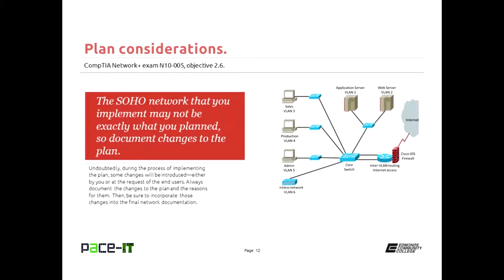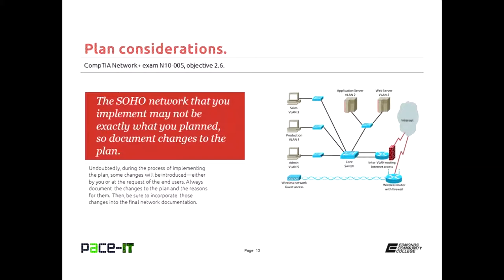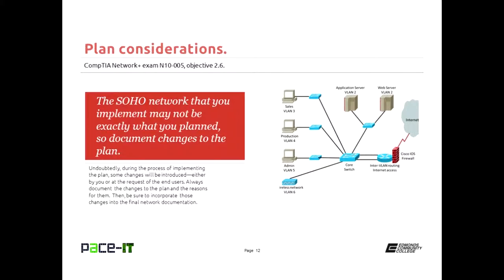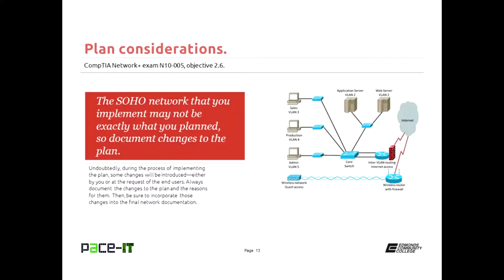So the network that you design and that you implement may not be exactly what you planned. So you need to document your changes. Why is that? Because even small changes can have a major impact on troubleshooting the network. There's not a whole lot of difference between the network that I'm showing right here and the one that was planned except for the addition of a wireless router that is connected straight to the Internet and that's your guest wireless network access. That's a small change, but it can have a major impact on the network. Always document changes. Also, always have your client sign off on the changes that you implement. That will save you in the long run.